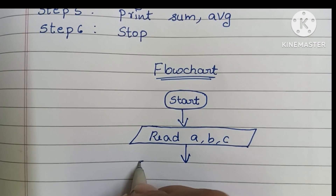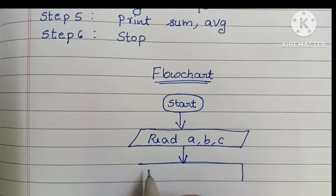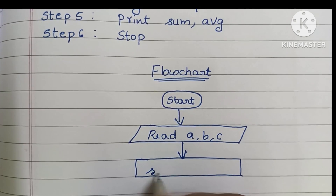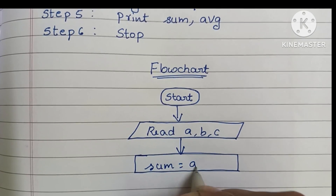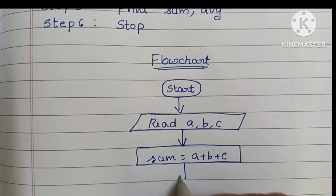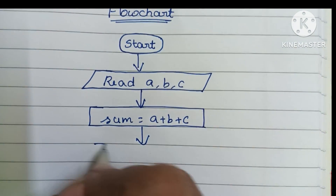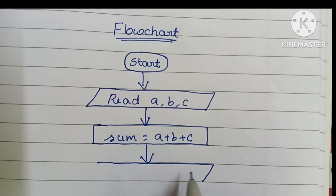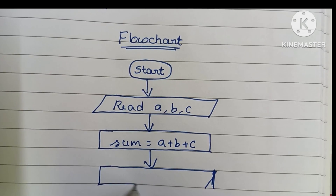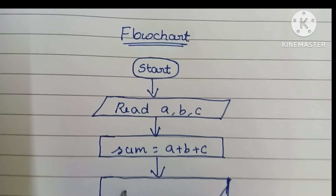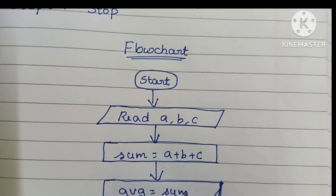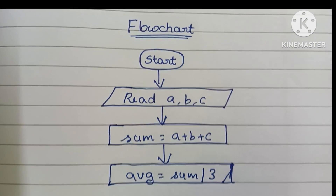Next we start the calculation. Calculations are done within a rectangular shape. First, sum = a + b + c is written in the rectangle. Then we calculate the average: average = sum / 3, also written in a rectangle.